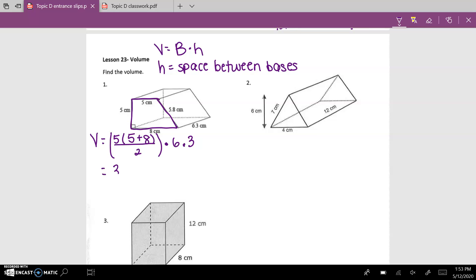When I simplify all of this down, I get 32.5 times 6.3. When I multiply it, I get 204.75 centimeters cubed, since we are talking about volume.